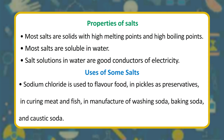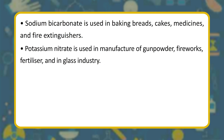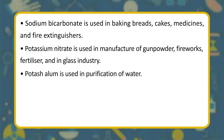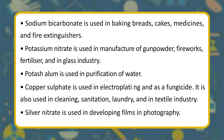Uses of some salts: sodium chloride is used to flavor food, in pickles as preservatives, in curing meat and fish, and in manufacture of washing soda, baking soda, and caustic soda. Sodium bicarbonate is used in baking breads and cakes, medicines, and fire extinguishers. Potassium nitrate is used in manufacture of gunpowder, fireworks, fertilizer, and in the glass industry. Potash alum is used in purification of water. Copper sulfate is used in electroplating, as a fungicide, in cleaning, sanitation, laundry, and in the textile industry. Silver nitrate is used in developing films and photography.